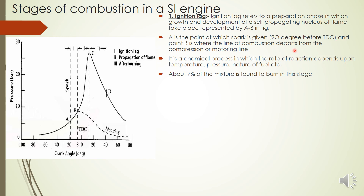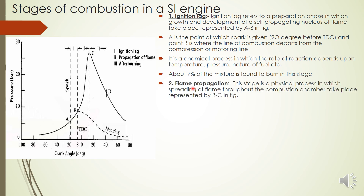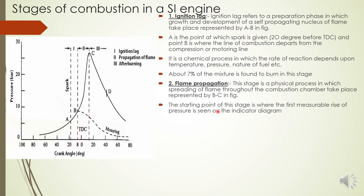The second stage, flame propagation (B to C), is the most important stage. It is a physical process — the traveling of the flame from the area near the spark plug to the other end of the combustion chamber. At point B a stable flame exists, and from B to C the flame travels across the chamber with a measurable, considerable rise in pressure.